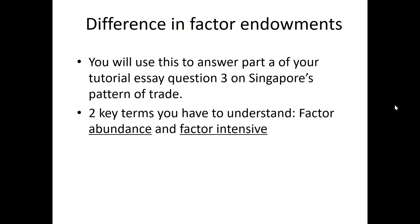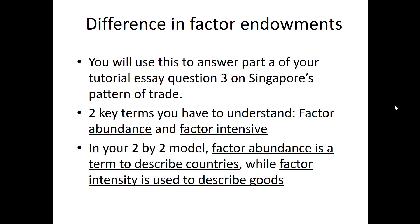Two key terms you need to understand are factor abundance and factor intensity. Factor abundance is a term used to describe countries, while factor intensity is used to describe goods. In the 2x2 model, the first 2 refers to countries and the other 2 refers to goods — so you use factor abundance to describe the countries and factor intensity to describe the goods.